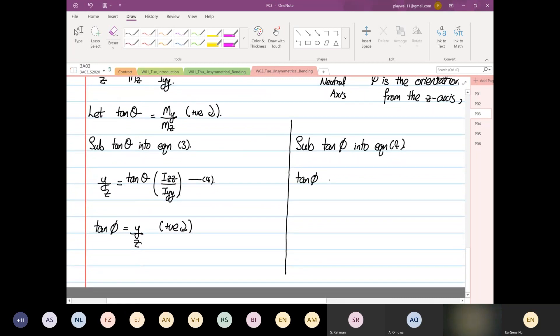So what we have now is tangent pi is equal to tangent theta, Izz over Iyy. And pi, what we see over here, so this is the final form.